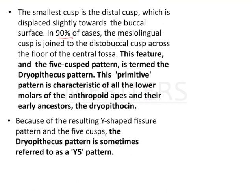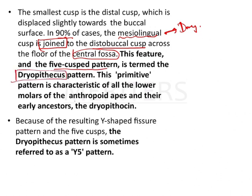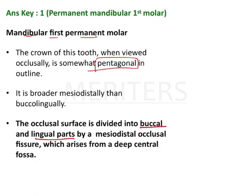In 90% of cases, the mesiolingual cusp is joined to the distobuccal cusp across the floor of the central fossa, and this pattern is known as the Dryopithecus pattern. This feature along with the 5-cusp pattern is termed the Dryopithecus pattern, and is characteristic of lower molars of the anthropoid apes as well as the Dryopithecus. It is also known as the Y5 pattern.